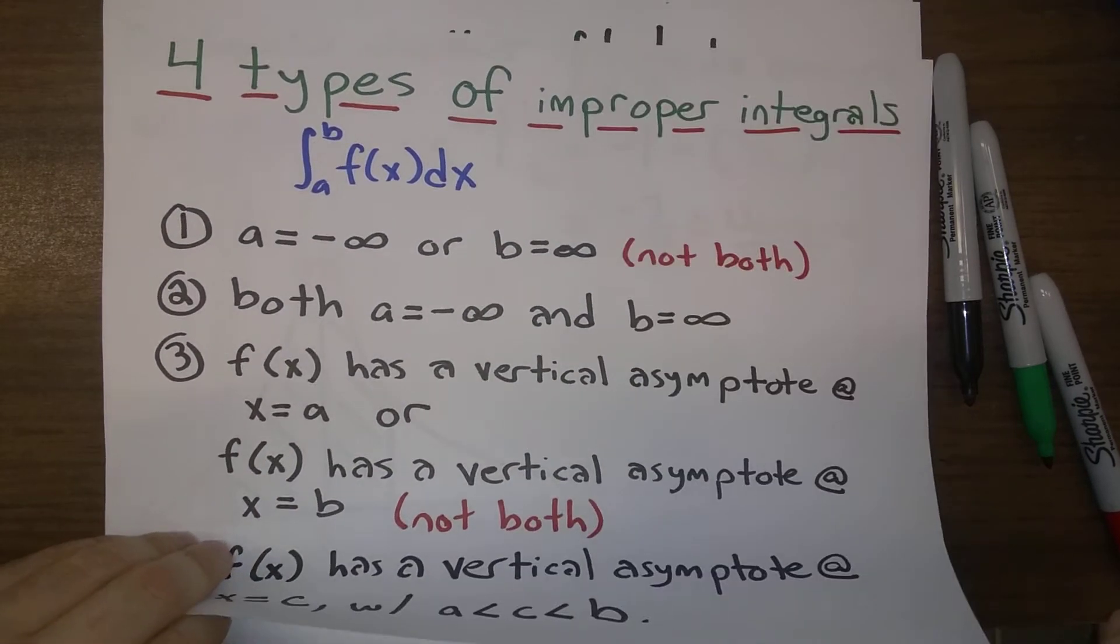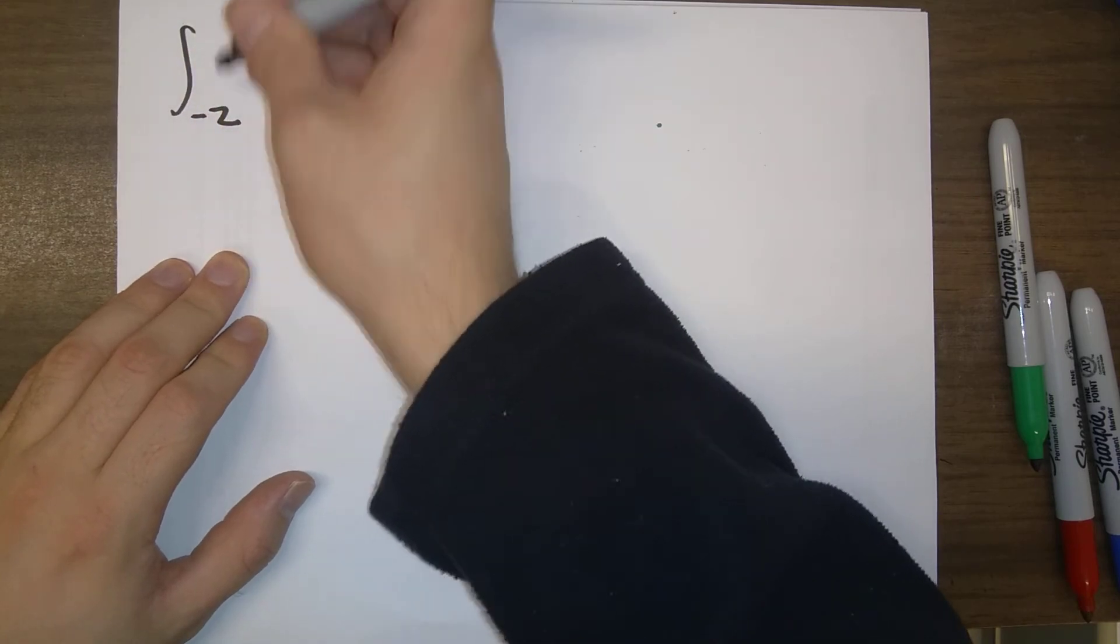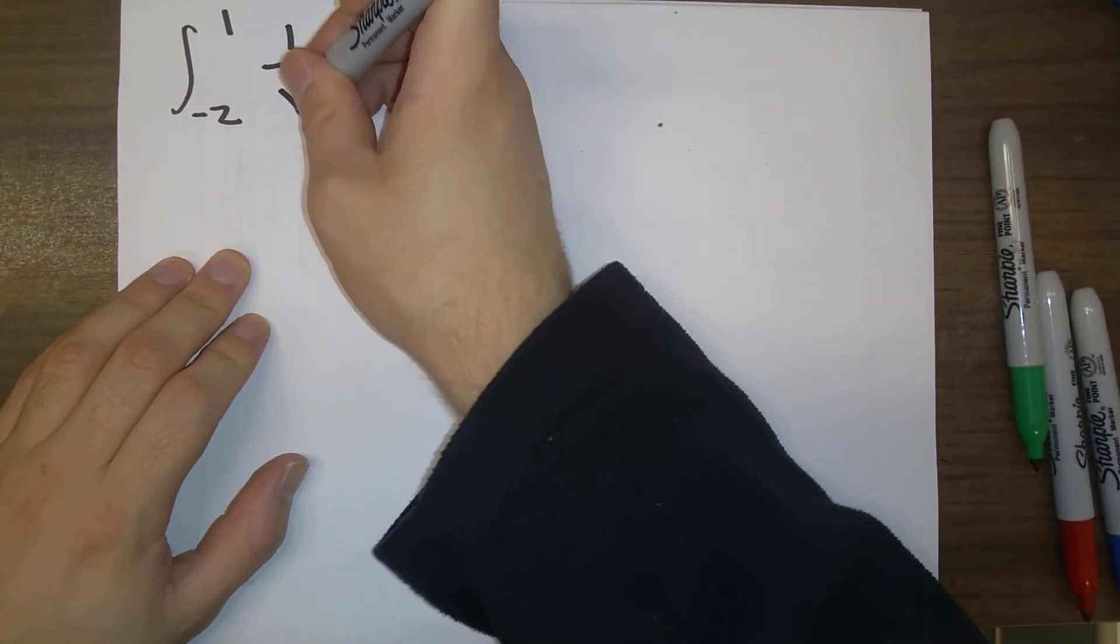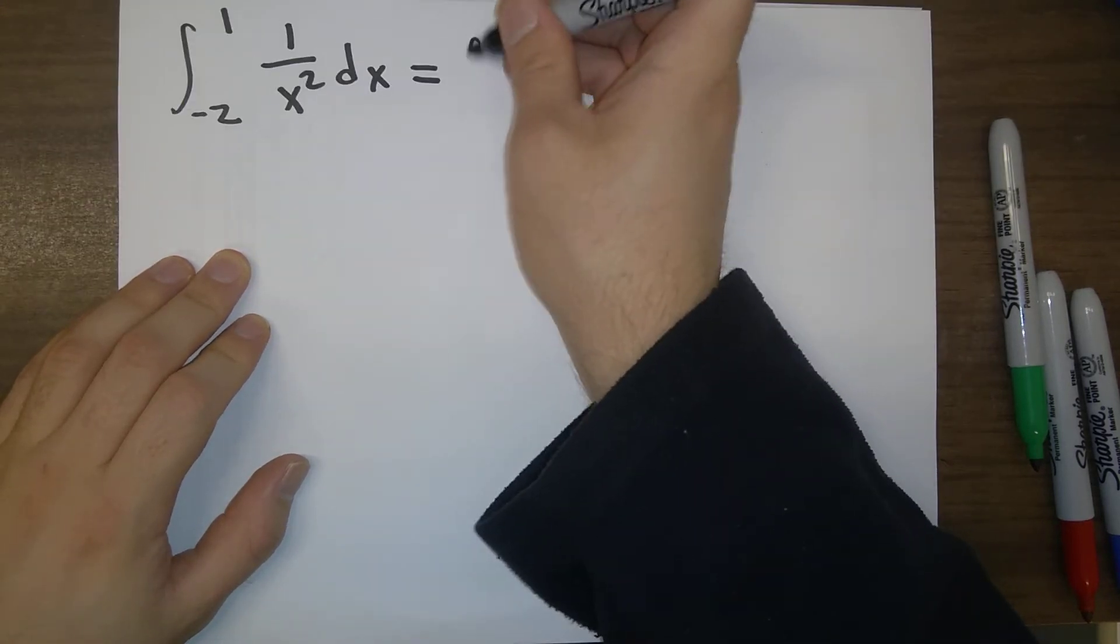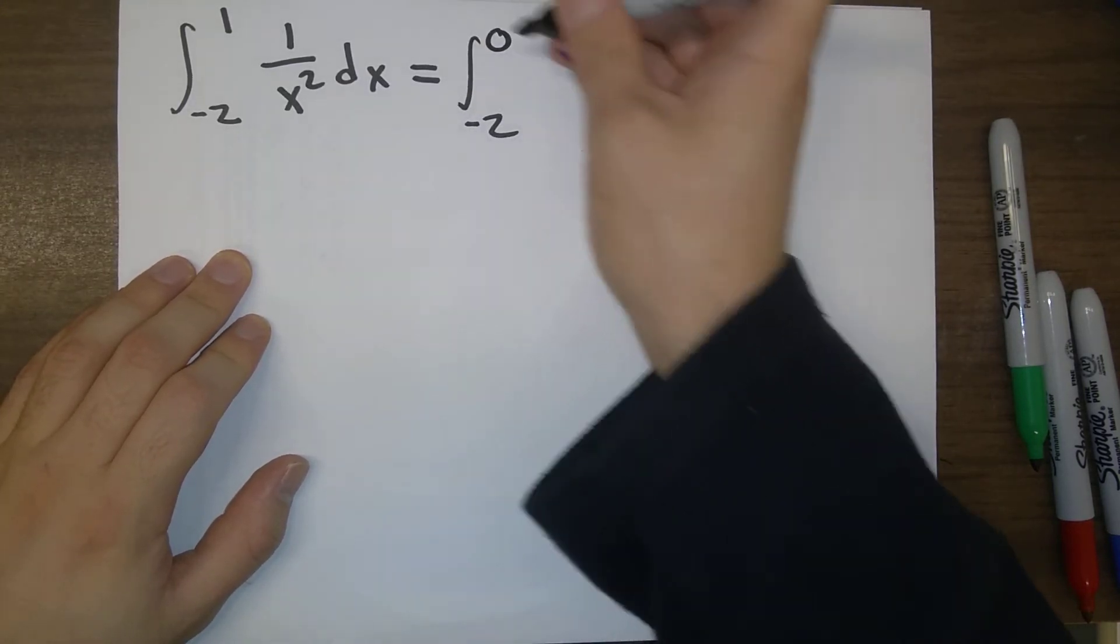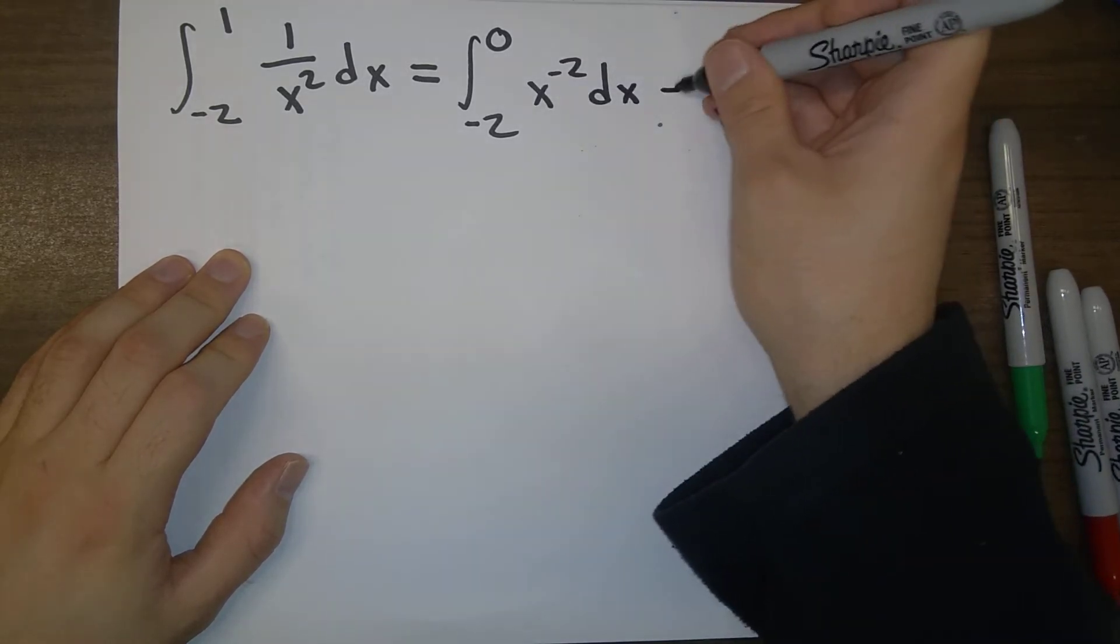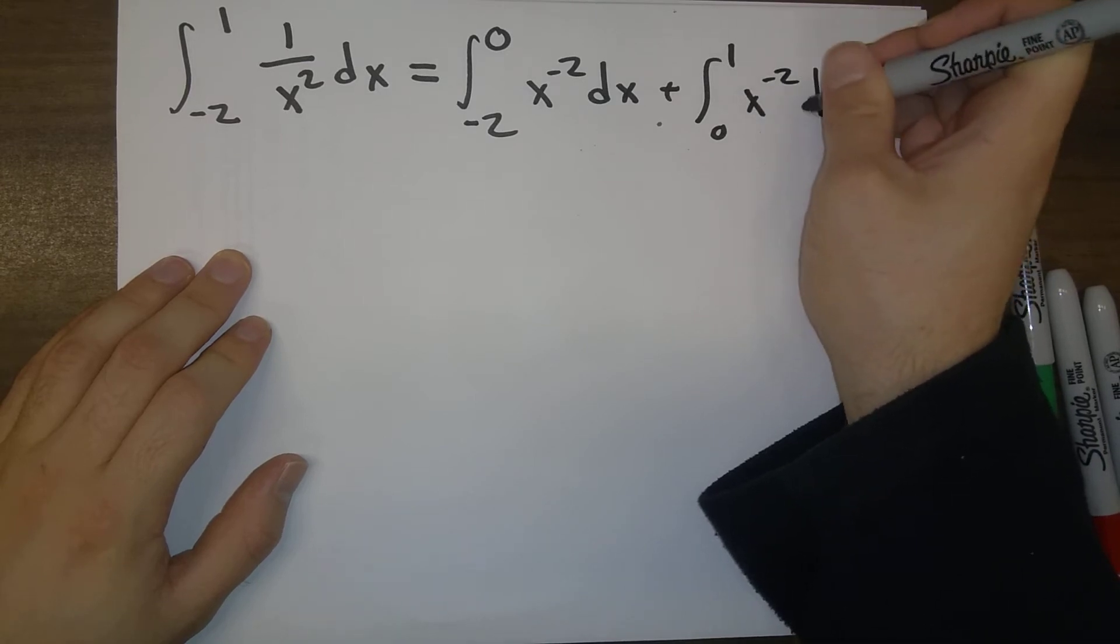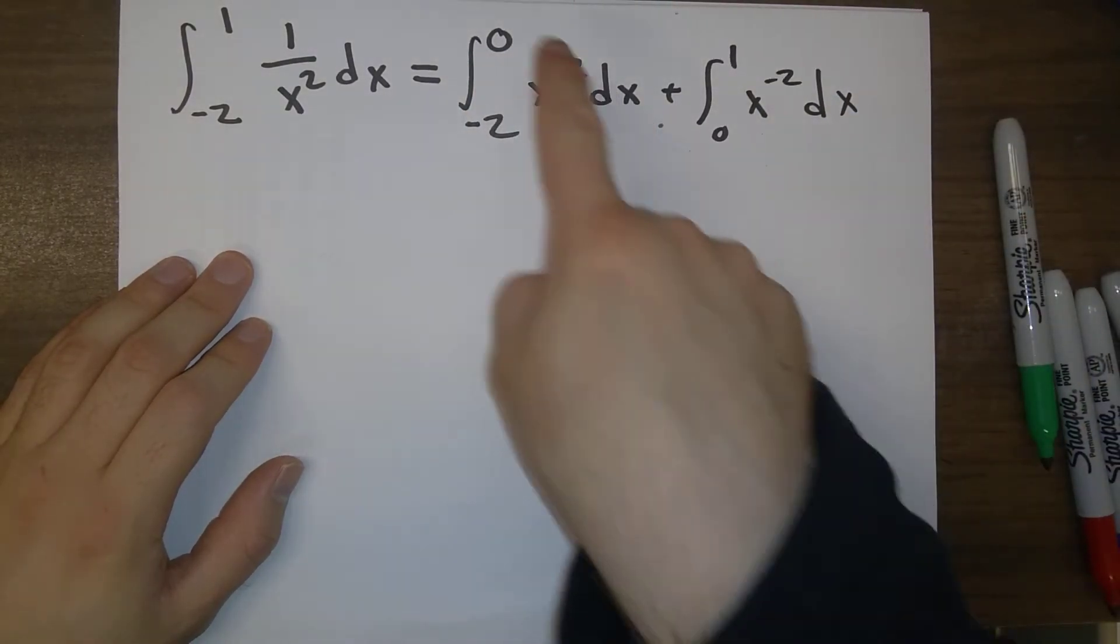So in order to deal with this, what do we have to do? We have to break our original integral up into two parts and look at them separately. So the integral from minus 2 to 1 of 1 over x squared dx is the integral from minus 2 to 0. Let me rewrite that as x to the minus 2 plus the integral from 0 to 1, x to the minus 2 dx. So we're going to break it at the trouble spot.